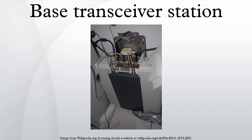A BTS may also have equipment for encrypting and decrypting communications, spectrum filtering tools, etc. Antennas may also be considered as components of BTS in a general sense, as they facilitate the functioning of BTS. Typically, a BTS will have several transceivers which allow it to serve several different frequencies in different sectors of the cell.